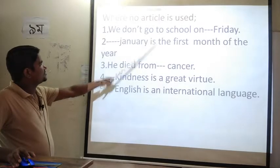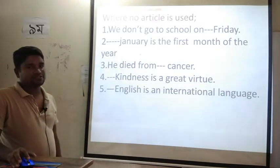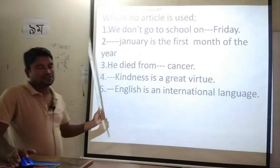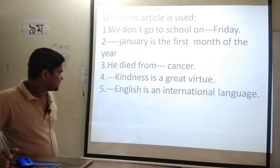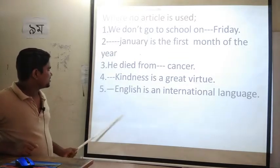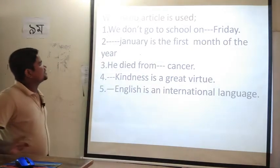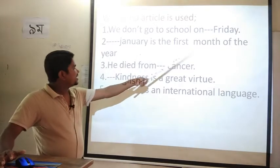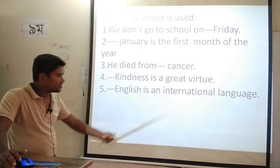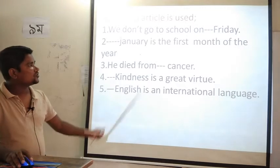Now look at where no article is used. Before the name of a day, we do not use any article. Before the name of a month, we do not use any article. Before the name of a disease, we do not use any article. Before an abstract noun, we do not use any article. Before the name of a language or a subject, we do not use any article. Examples: We don't go to school on Friday. January is the first month of the year. He died from cancer. Kindness is a great virtue. English is an international language.